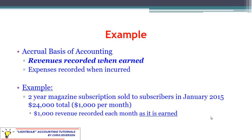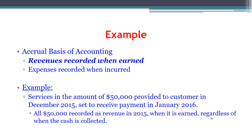Under the accrual basis, take that two-year magazine subscription sold in January 2015 at $1,000 per month. We record $1,000 in revenue each month as it is earned — as soon as we send out each month's magazine. This spreads the revenue over time. For the $50,000 services provided in December 2015 with payment in January 2016, all $50,000 is recorded as revenue in 2015 because that's when we earned it.